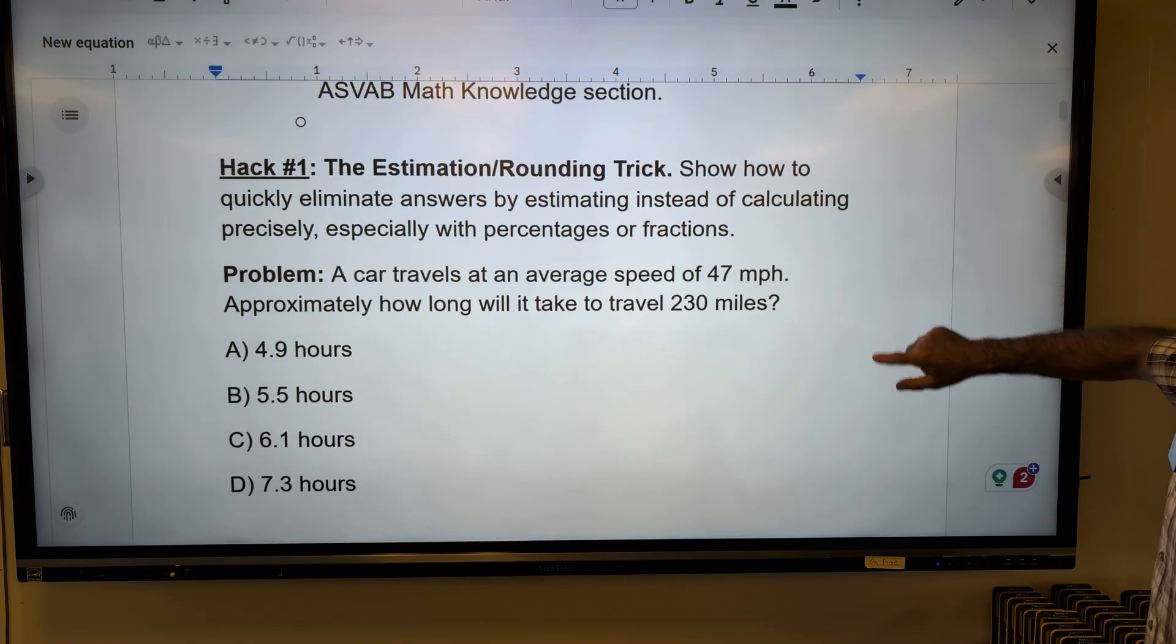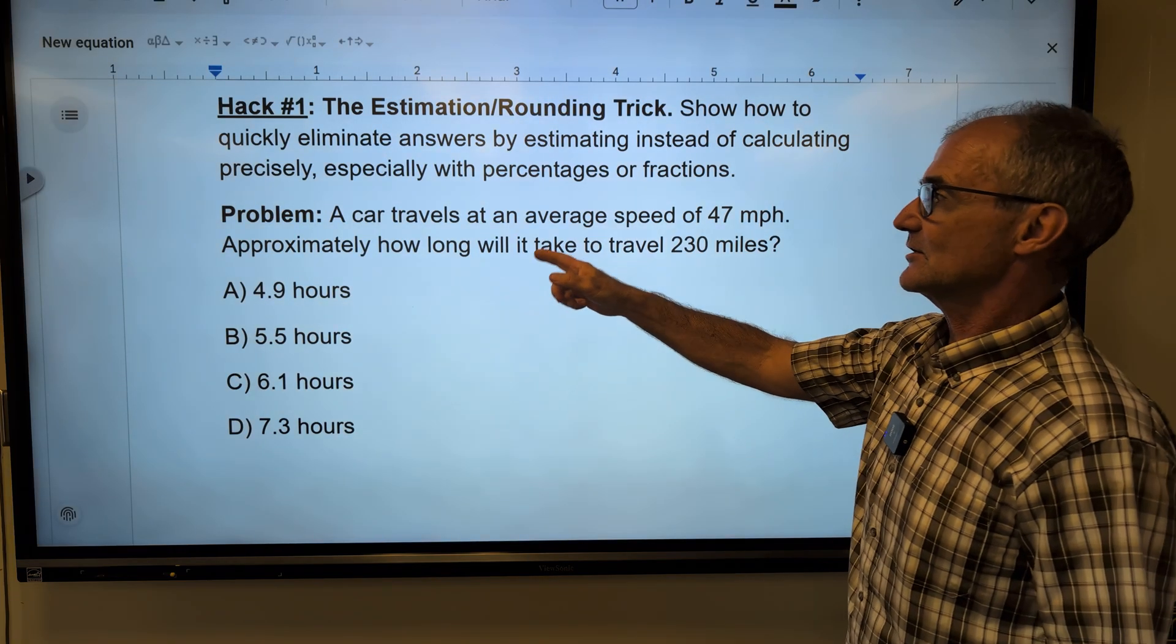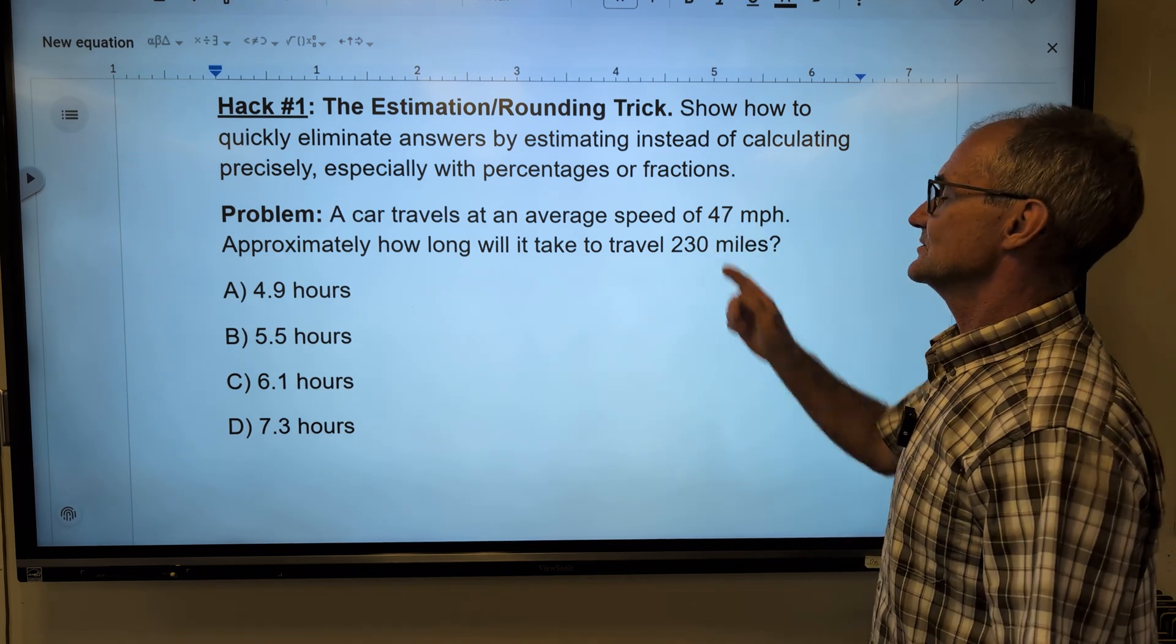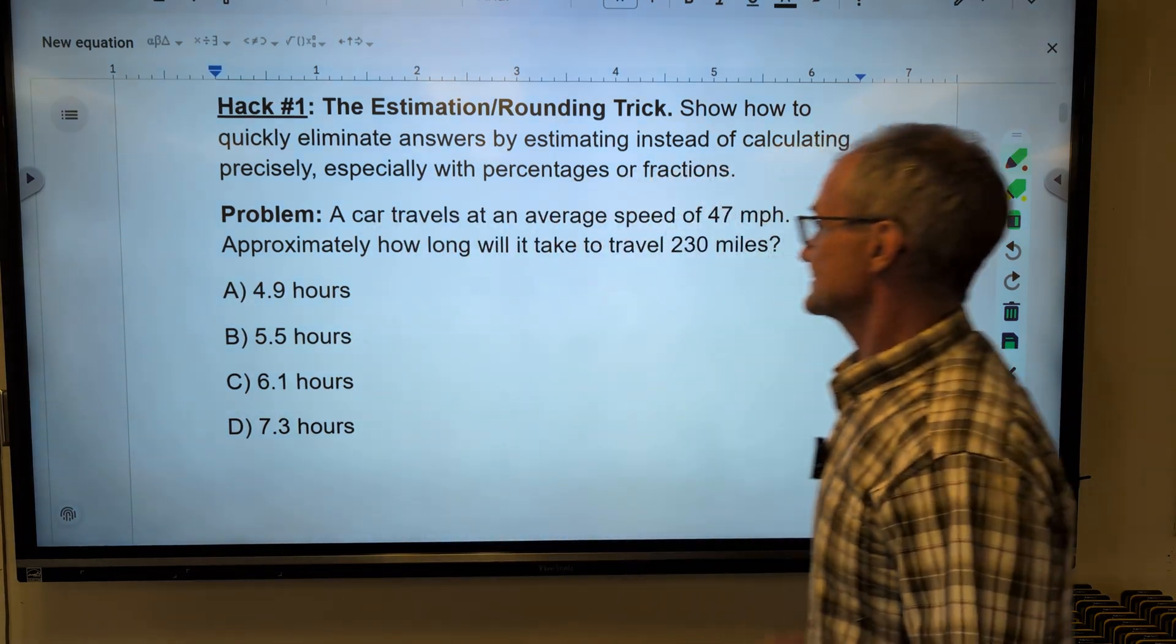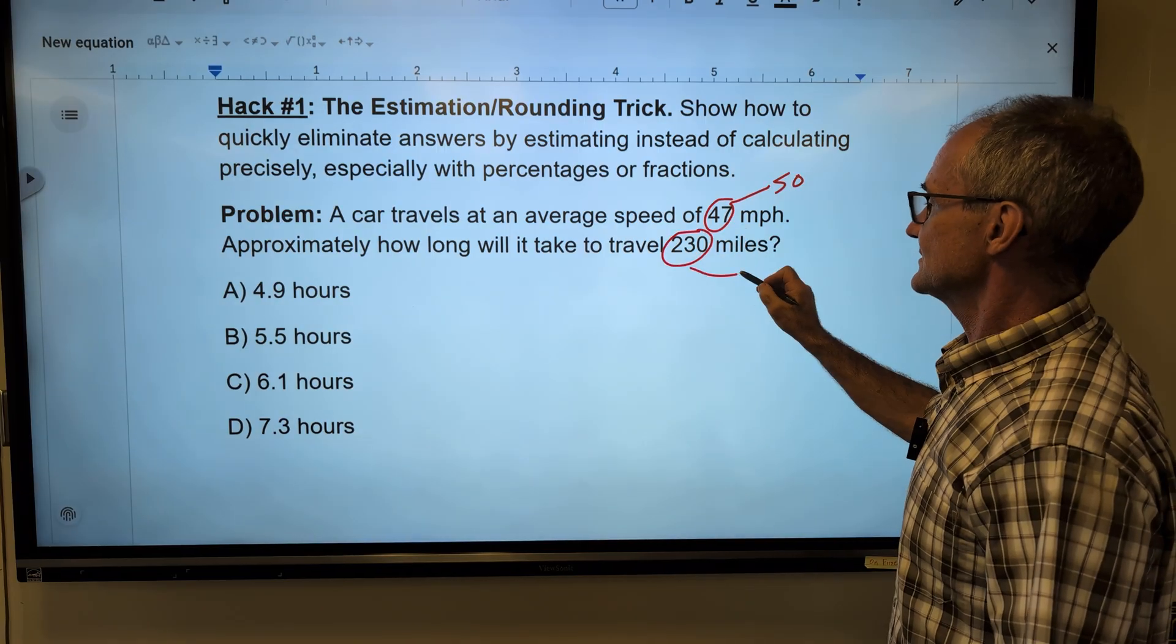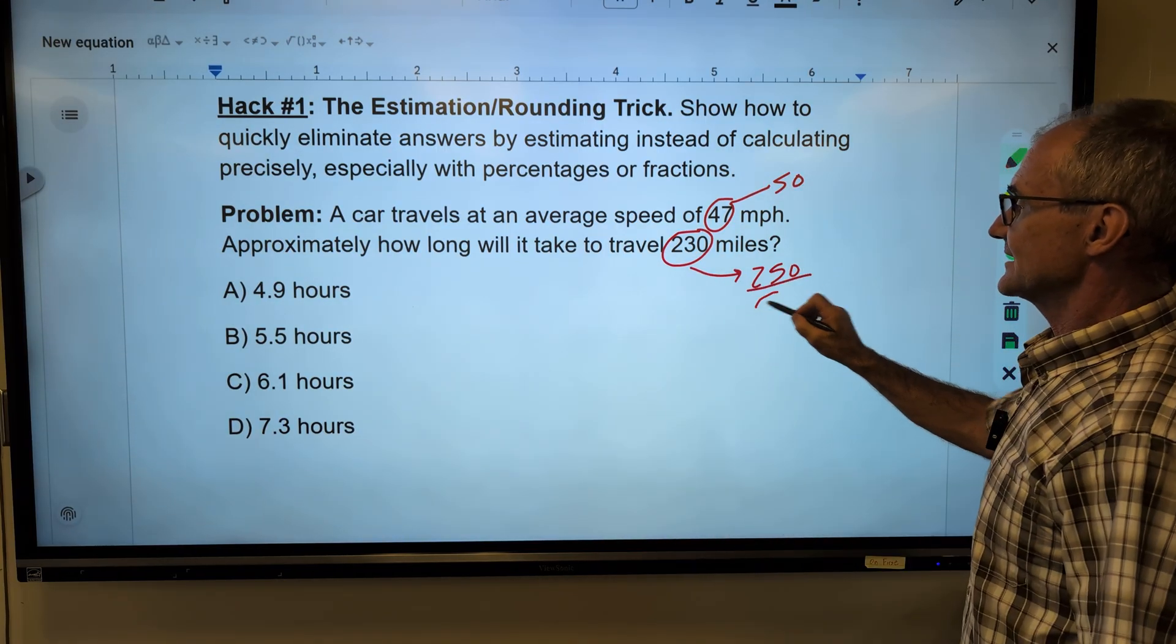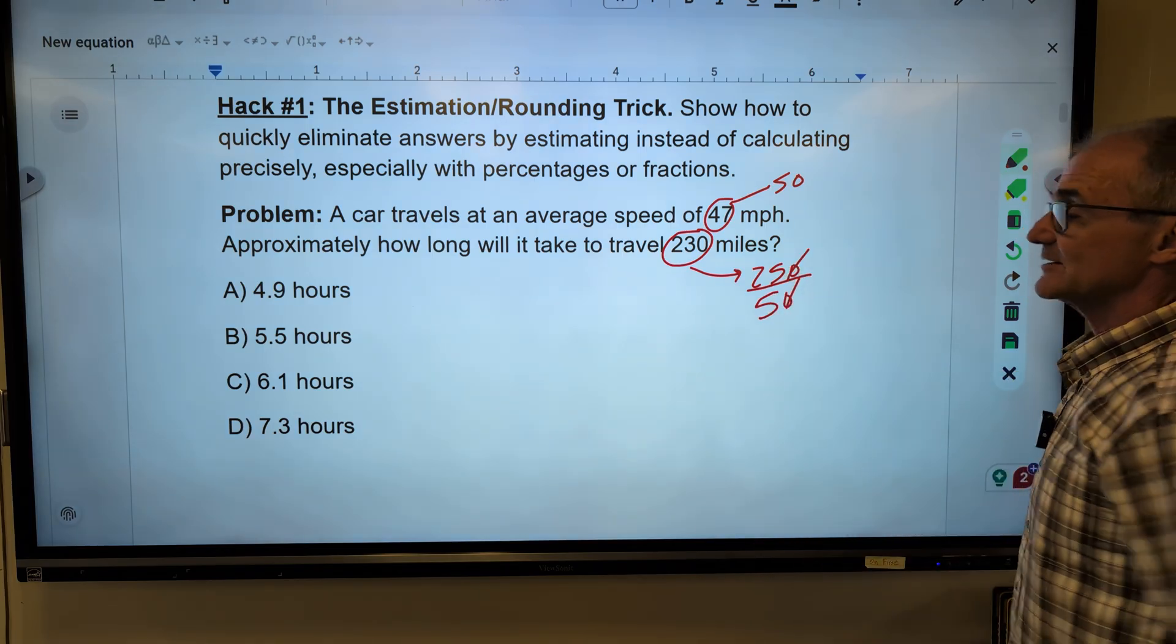Estimating and rounding. So you have multiple-choice answers, so rounding is a good technique to go. So if the problem were a car travels 47 miles per hour, how long will it take to go 230 miles? I could round both these numbers up. I could round this up to 50 and this up to 250, and then I know that 250 divided by 50, my zeros drop out.